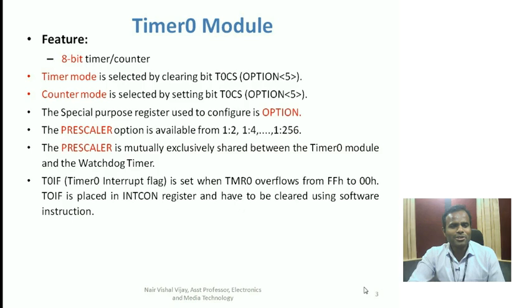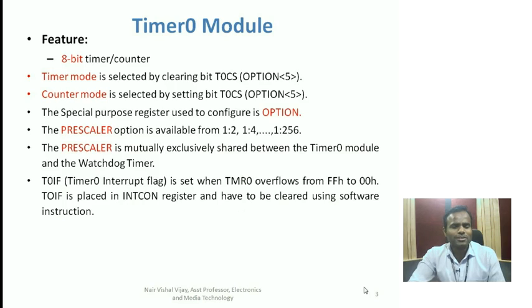Timer 0 is an 8-bit timer or counter. Whenever a timer counts with reference to its internal clock frequency, it is called to operate in timer mode. Whenever it counts an externally coming clock frequency or an event, it is called to operate in counter mode. Timer 0 can operate as both timer and counter. Timer mode is selected by clearing the T0CS (Timer 0 Clock Source Select) bit, while counter mode is selected by setting this bit.